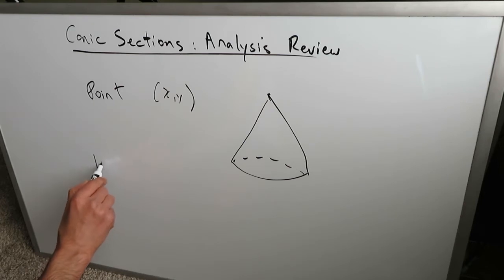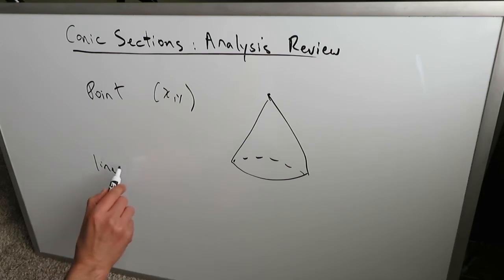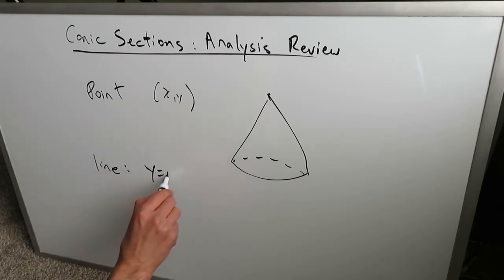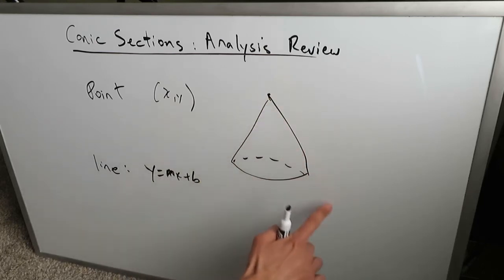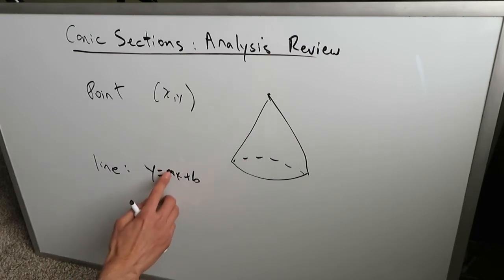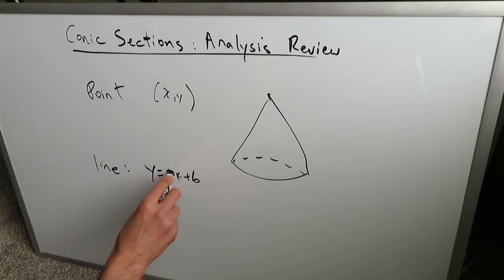Going from the easiest to something more involved, we have the line. The line is a conic section which happens to take the form y = mx + b. It's not a hard conic section. If you look at this side over here and you look at it at a certain cross section, you do have a conic section representing a line.